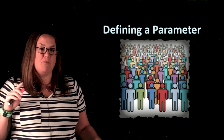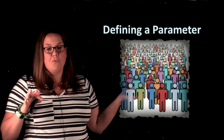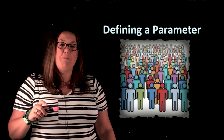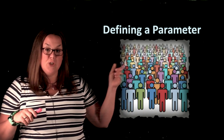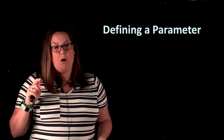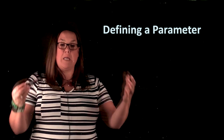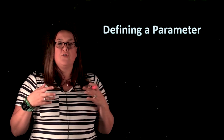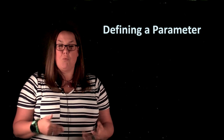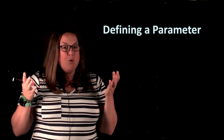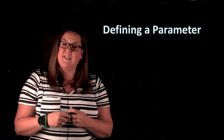So parameters, remember, are those values that are going to be referring to a population. We've looked at this icon as kind of like this is our population. Remember that a number referring to the population is called a parameter. However, when you're talking about a parameter in terms of making an inference, you're never going to know what that number actually equals. So we're trying to make an inference on that measurement, but we don't know what that measurement is. So when you define a parameter, you're not going to have a number — it's going to be a sentence.